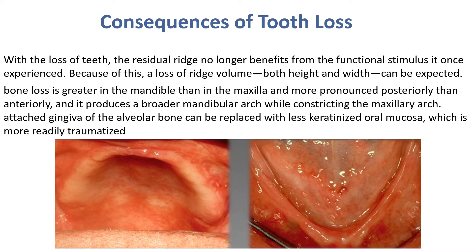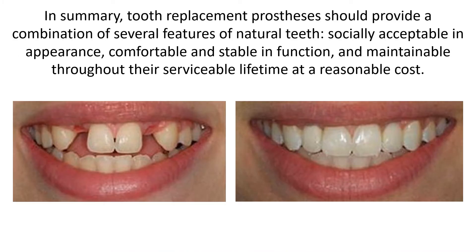Attached gingiva of the alveolar bone can be replaced with less keratinized oral mucosa, which is more readily traumatized. In summary, tooth replacement prostheses should provide a combination of several features: socially acceptable in appearance, comfortable and stable in function.